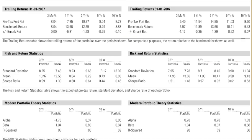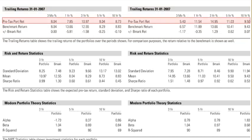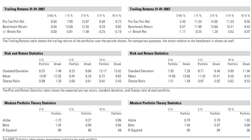The next section in this report shows us the trailing returns for each of the portfolios compared to its benchmark. This includes the pre-tax portfolio returns for the current and proposed portfolios for 3 months, 1, 3, 5, and 10 years.